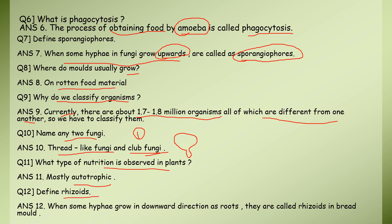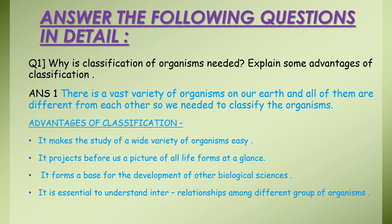Next: define rhizoids. What are rhizoids? When some hyphae in fungi grow in the downward direction like roots, we call them rhizoids. They grow in bread molds. When hyphae grow upward, we call them sporangiophores; when they grow downward, we call them rhizoids.